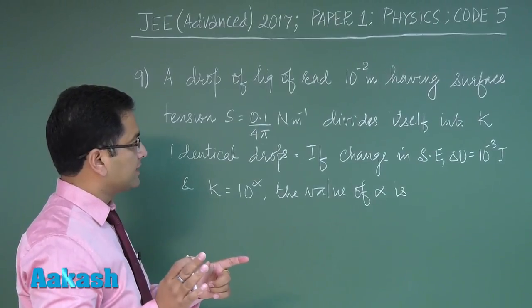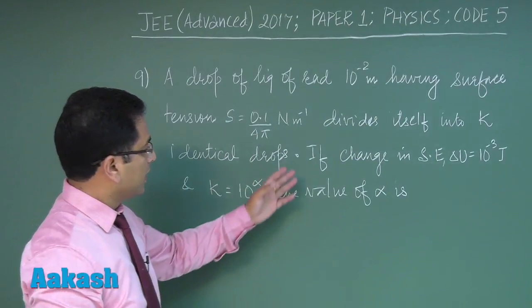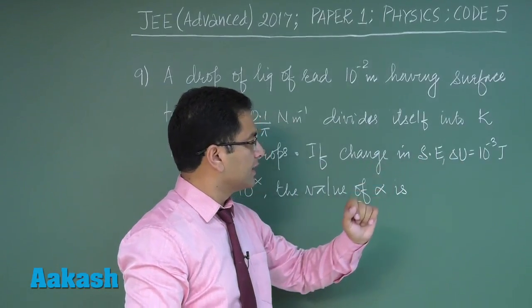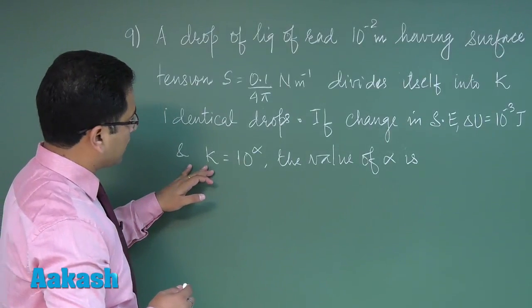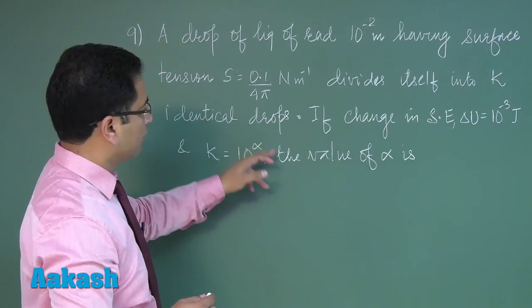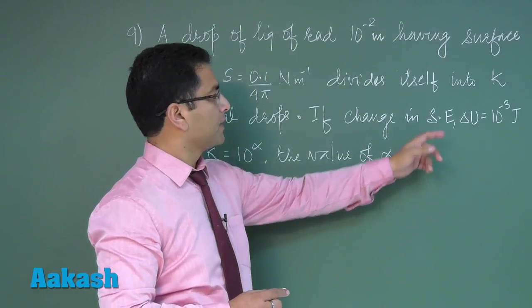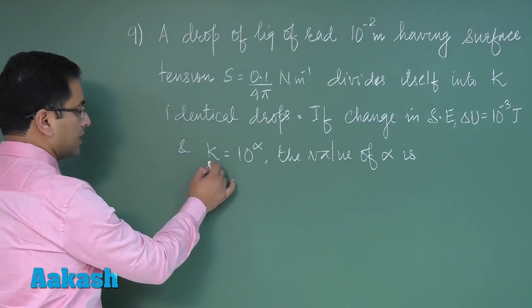divides itself into k identical drops. If the change in surface energy ΔU = 10^(-3) joule and k is given as k = 10^α, we need to find the value of α.